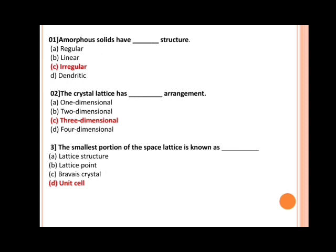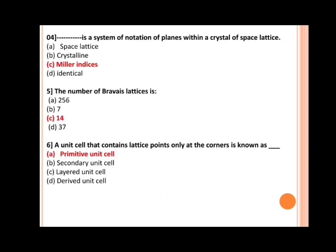Next, the crystal lattice has dash arrangement. Options are: a) one-dimensional, b) two-dimensional, c) three-dimensional, d) four-dimensional. The correct answer is C, three-dimensional. Next, the smallest portion of the space lattice is known as dash. Options are: a) lattice structure, b) lattice point, c) Bravais crystal, d) unit cell. The correct answer is unit cell. Next, dash is a system of notation of planes within a crystal of space lattice. Options are: a) space lattice, b) crystalline, c) Miller indices, d) identical. The correct answer is C, Miller indices.